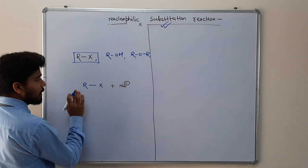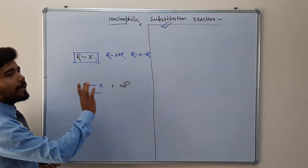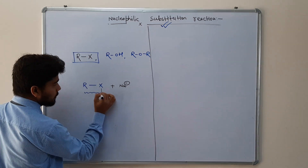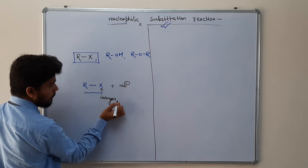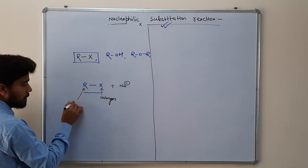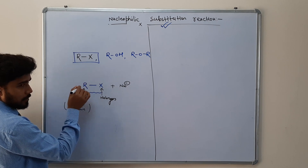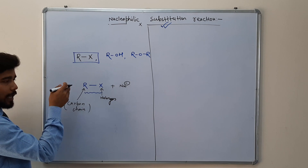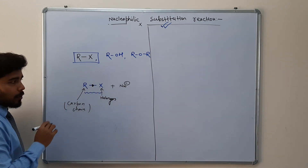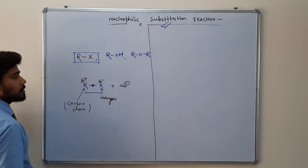We need to identify where the positive charge is in this compound. A nucleophile will either be negatively charged or have extra electrons. In RX, X stands for halogens, and halogens have higher electronegativity compared to R, which is a carbon chain. Since carbon has less electronegativity than halogens, halogens pull electron density towards them, leading to partial negative charge on the halogen and partial positive charge on the carbon.